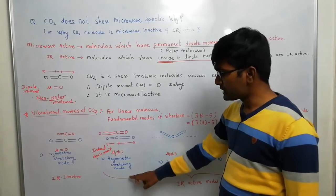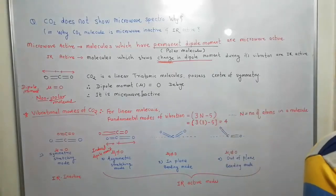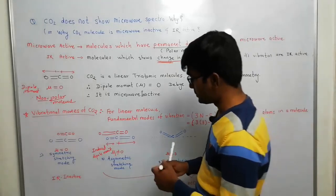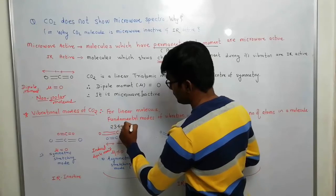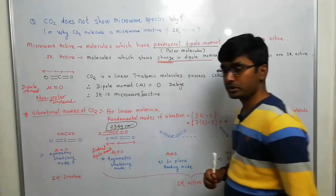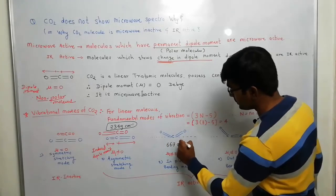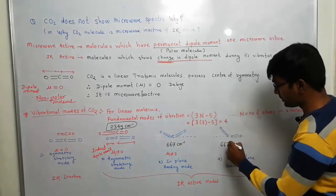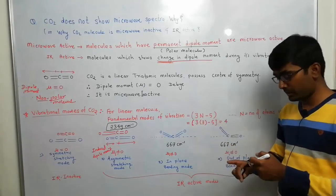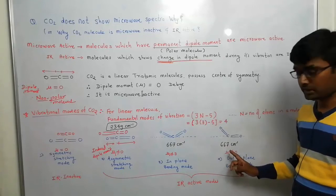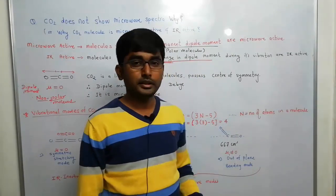The asymmetric stretching mode is observed at a peak of 2349 cm⁻¹, and both bending modes are observed at 667 cm⁻¹. Both bending modes absorb the same amount of energy, so they appear at the same position — 667 cm⁻¹. These are the IR peaks observed at these wave numbers. If you have any questions, you can WhatsApp me or put the question in the chat box of this YouTube video.